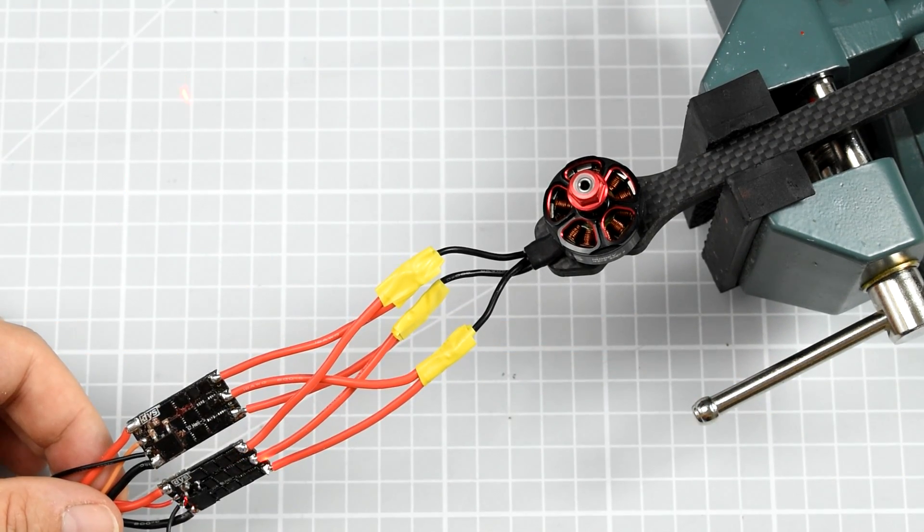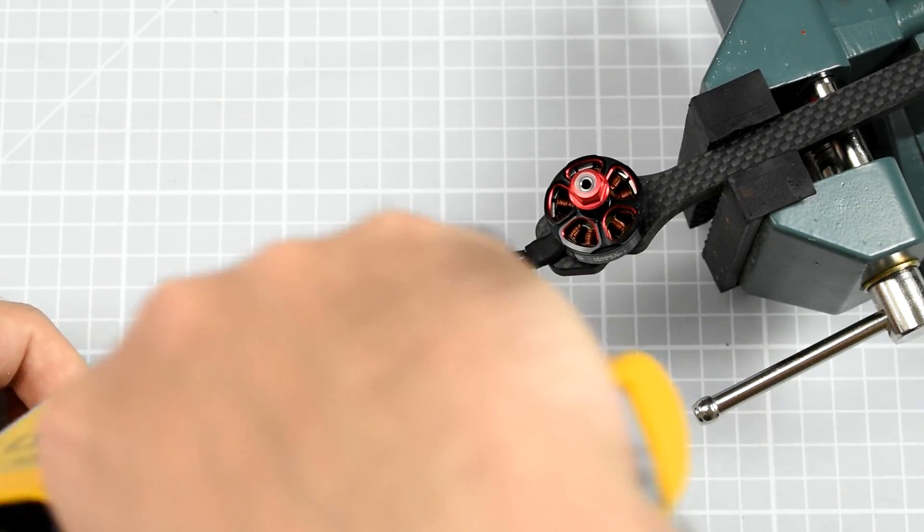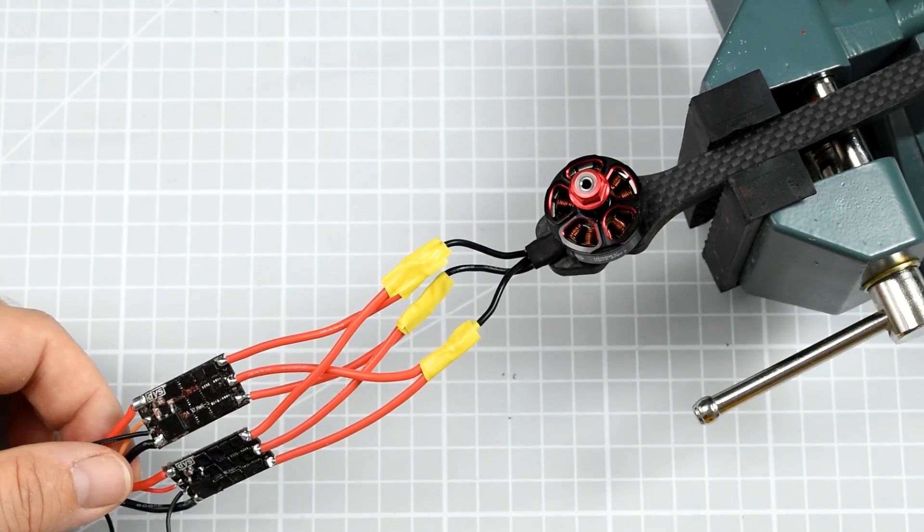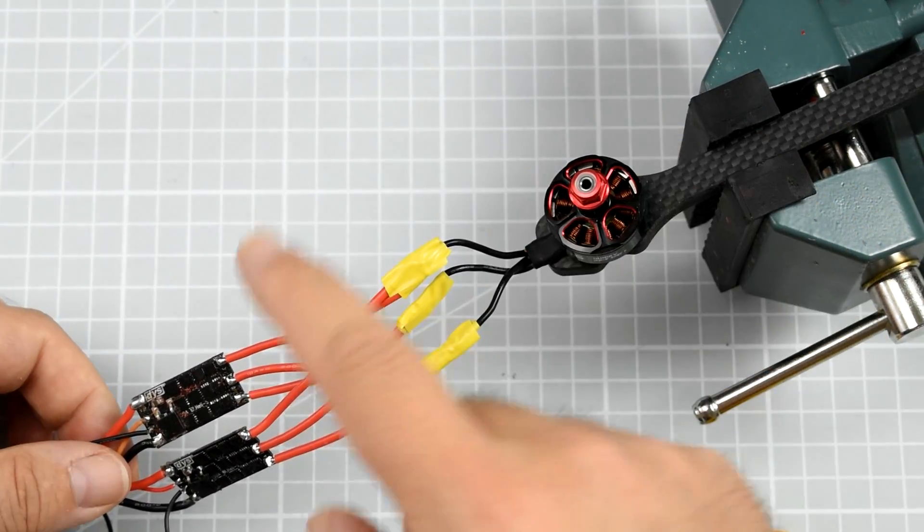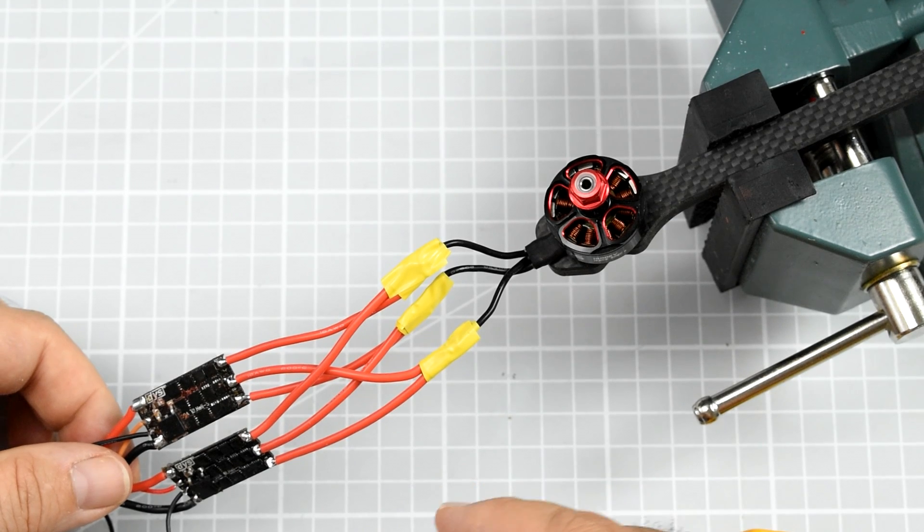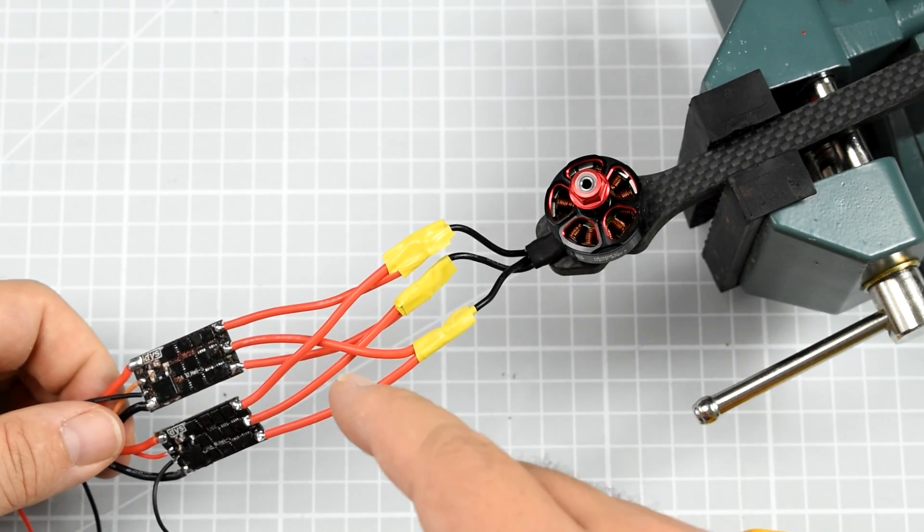And now the ESCs are really, really getting hot. This one is already 60 degrees Celsius. And this one is also 60 degrees Celsius. So apparently previously the ESCs were trying to drive the motor in the same direction. Now they just go into constant short circuit.